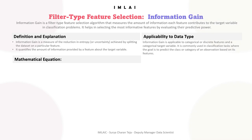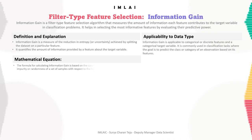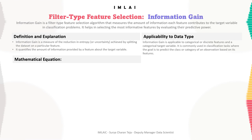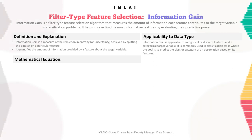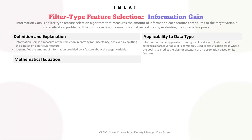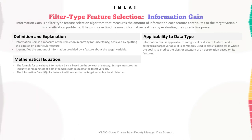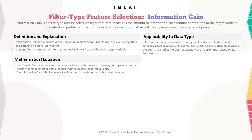The formula for calculating information gain is based on the concept of entropy. Entropy measures the impurity or randomness of a set of samples with respect to the target variable. The information gain IG of a feature A with respect to the target variable Y is then calculated using this entropy concept.